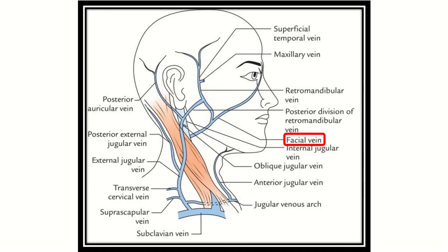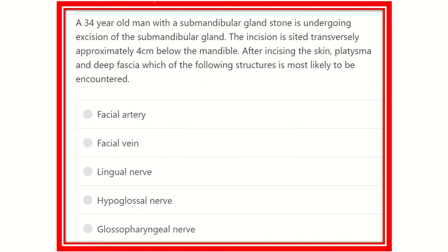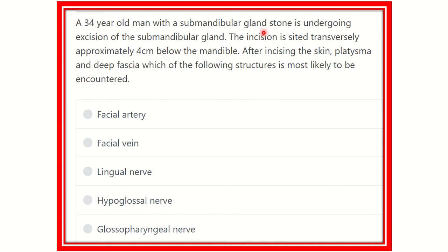Hi everyone, how are you? Welcome to another question and association for MRCS exam. Here is the question: a 34-year-old man with a submandibular gland stone is undergoing excision of the submandibular gland. The incision is sited transversely approximately 4 cm below the mandible. After incision of the skin, platysma, and deep fascia, which following structure is most likely to be encountered?